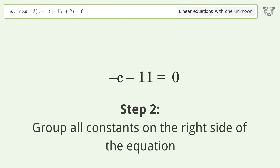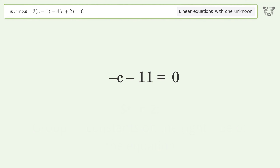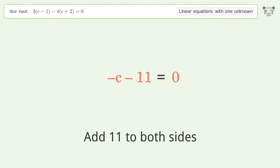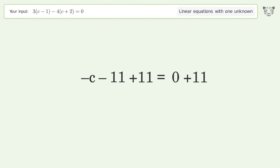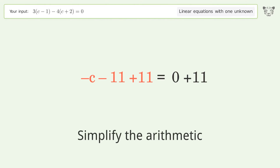Group all constants on the right side of the equation. Add 11 to both sides. Simplify the arithmetic.